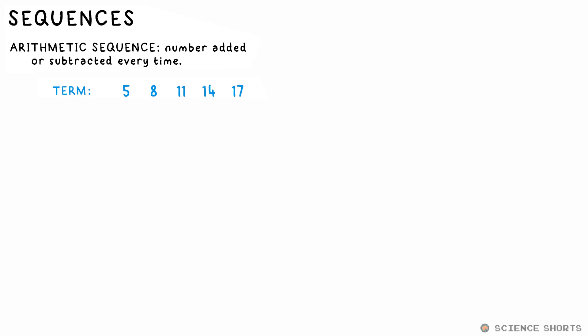An arithmetic sequence is the simplest kind. It's one where the rule is that a number is added or subtracted each time. If that's the same number every time, it's a linear arithmetic sequence.